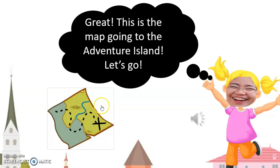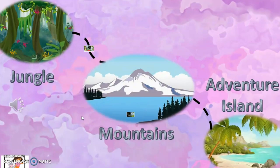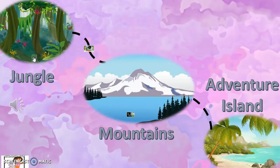This is the map going to the Adventure Island — let's go! All right, so this is the awesome part, this is what I really like about PowerPoint 365: you can zoom in the picture. So let's click the map — boom — that's the zoom feature that I'm talking about. Now there's another zoom effect here.